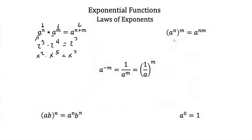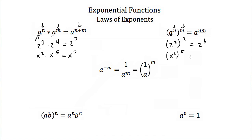The next law is when we have a power to a power. If I have a base to an exponent and then that whole number is to another exponent, I can just multiply the exponents. So 2 cubed and then squared equals 2 to the 6th. x squared and then to the 5th power equals x to the 10th, because 2 times 5 gives us 10.